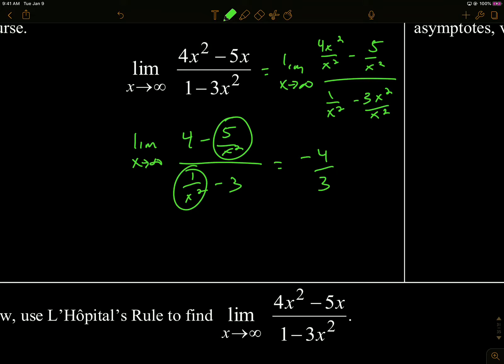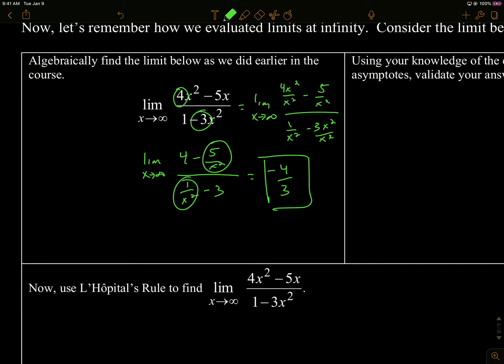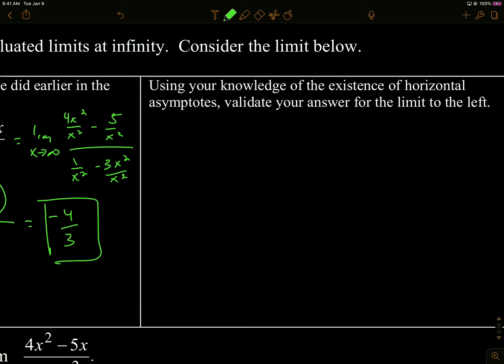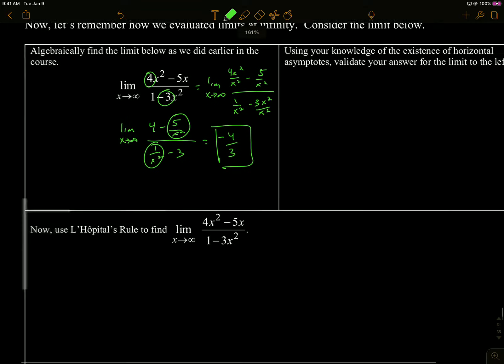The other way we said to do it was if you understand your horizontal asymptotes, and that x approaching infinity means end behavior. Horizontal asymptotes also mean end behavior. So when the degrees of the numerator match the degree of the denominator, it's leading coefficients. So you've got your 4 and your negative 3 here, because the horizontal asymptote is negative 4 thirds. I don't care which way you do that. The other way is a lot more explanation though.